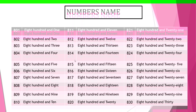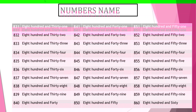Next, number names. You can read — can you read the numbers with their spelling? From 831, 832, 833, 834, 835, 836, 837, 838, 839, 840. Yes, very good students. You can count the numbers from 831 to 840. Let's begin.